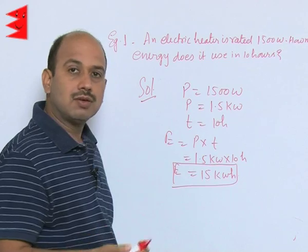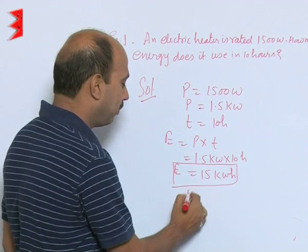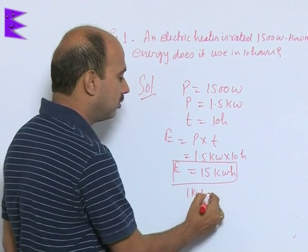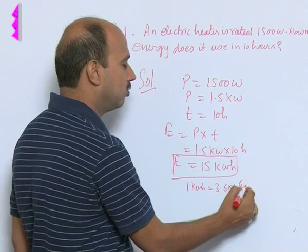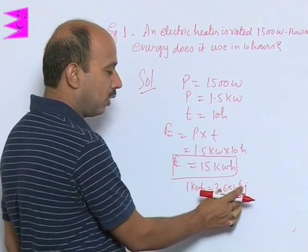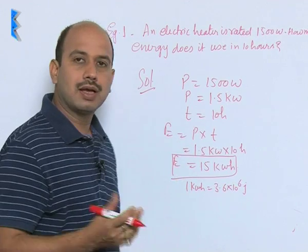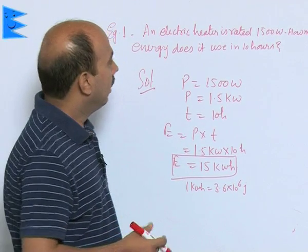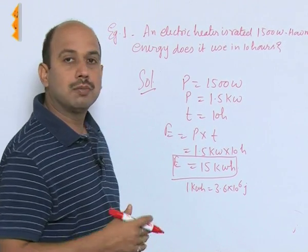If somebody is asking to find in SI unit, by replacing 1 kilowatt hour is equal to 3.6 into 10 raise to power 6 joule, if you multiply this quantity with this 15, you will be getting answer in SI unit of energy. Now we will come to the next question.